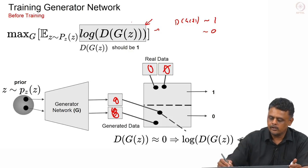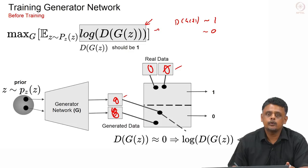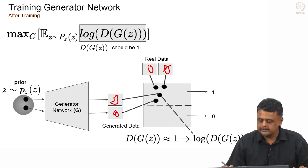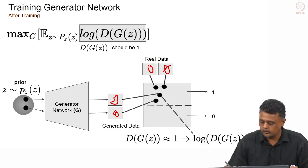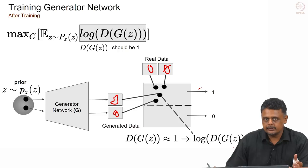Checking this: when the discriminator correctly classifies the generator's output as close to 0, log D(G(Z)) becomes a very large negative number. On the other hand, when the generator has progressed to producing very realistic samples and the discriminator incorrectly classifies the output as class 1, log D(G(Z)) becomes close to 0. Maximizing this cost function with respect to the parameters of the generator network leads to the generator outputting samples very close to the training data distribution.